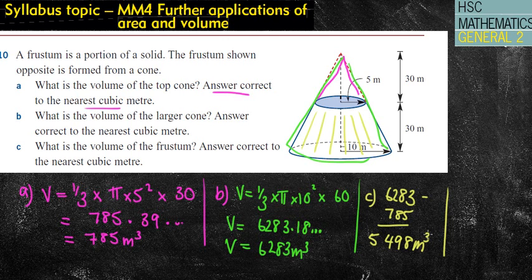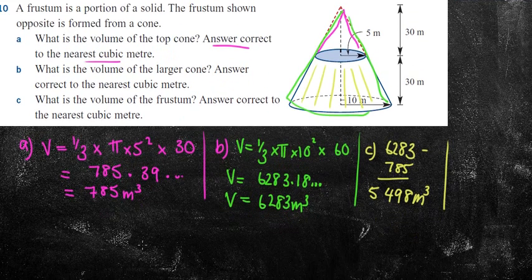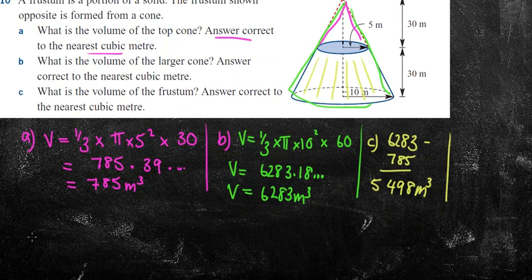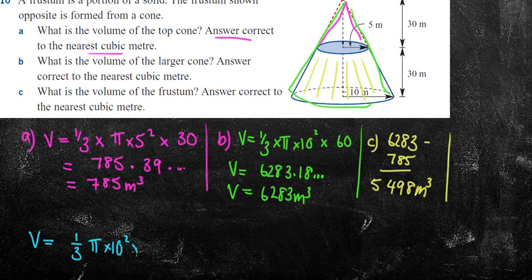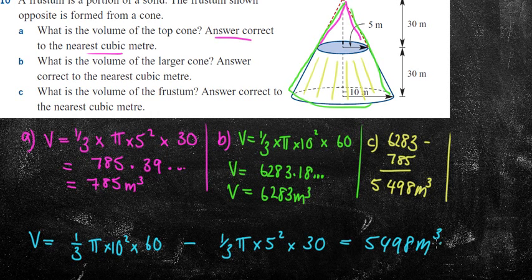To be honest, I could have done C in one hit, and I do want to show this. I'm just going to move this up a little bit. Now, if I wanted to do this in one sort of calculation, I could have simply said the big cone, which would have been one third pi times 10 squared times 60, subtract one third times pi times 5 squared times 30, and that would have given me the answer of 5,498 meters cubed anyway. So you could have done that in one calculation, but that's completely up to you.